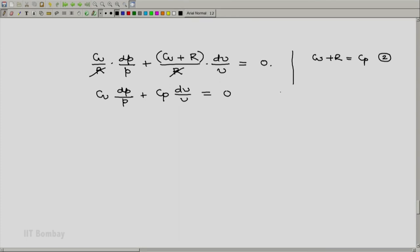So we use this CV plus R with CP property of an ideal gas, so item 2 is again used here. So we end up with CV dP by P plus CP dV by V equals zero. And then we divide this equation throughout by CV. And note that the ratio of specific heat, CP by CV, is defined to be gamma. So we end up with dP by P plus gamma dV by V equals zero. Let us say this is equation C.